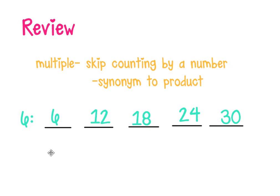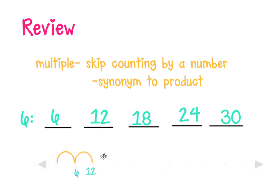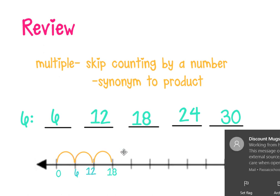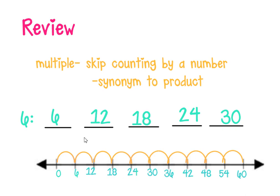Another way to show multiples is with a number line. If we skip count on the number line, the first multiple is six, the second is twelve, the third is eighteen, then twenty-four, thirty, thirty-six, forty-two, forty-eight, fifty-four, sixty. These are all multiples of six shown on a number line.